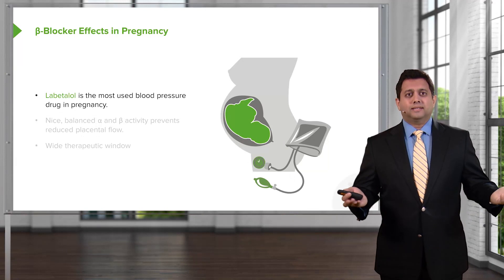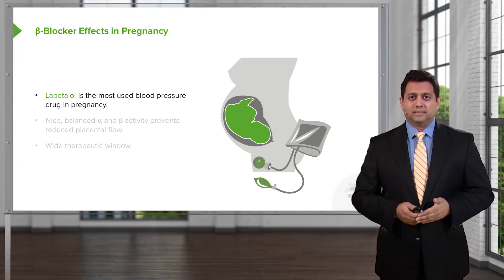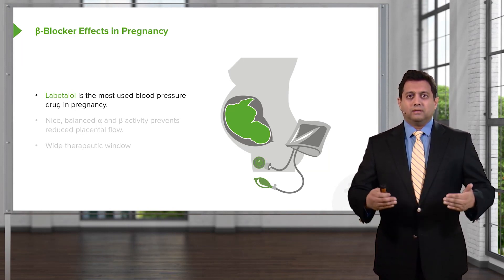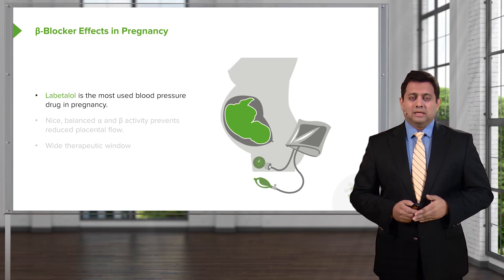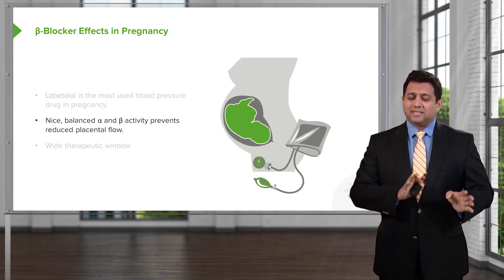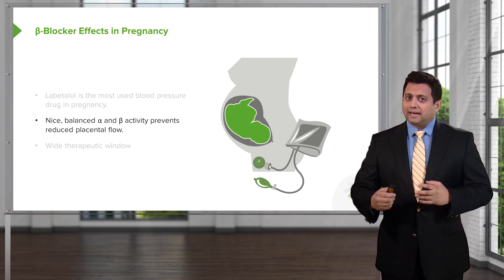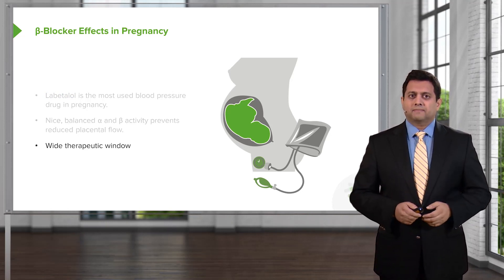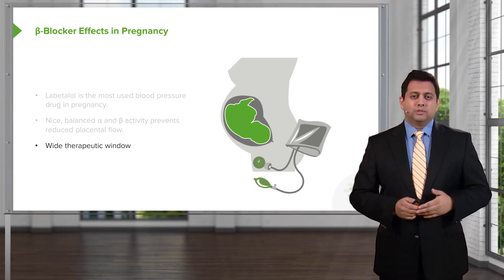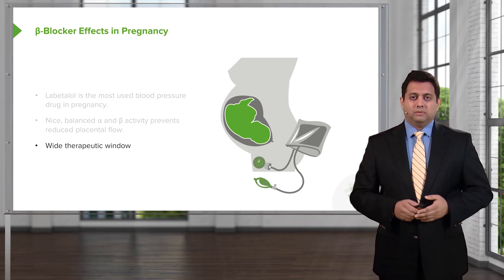For beta blockers in pregnancy, labetalol is the most used blood pressure drug. We have over a million woman-years of experience using labetalol for blood pressure control in pregnancy. It's a balanced drug with both alpha and beta activity, which prevents reduced placental flow. It has a wide therapeutic window — we can go anywhere from 100 mg to 2,400 mg a day based on patient tolerance.